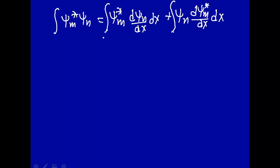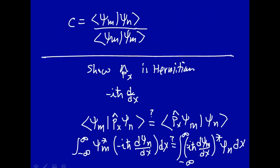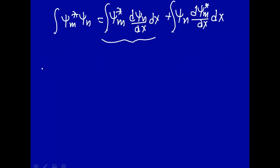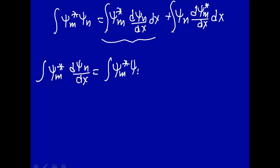So this is integration by parts — you take the first derivative of one function and multiply by the other, integrate over space, then do the same with the other function. Rearranging, the integral of psi_m star d psi_n dx equals the integral of psi_m star d psi_n minus the integral of psi_n d psi_m complex conjugate dx.